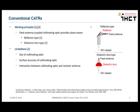I want to give a brief introduction to conventional CATRs. Conventional CATRs employ a feed antenna coupled to a range collimating optic, which provides plane waves. The RX is placed and rotated in these plane waves. You can see sketches on the right for reflector type and dielectric lens type CATRs. This is basically the whole principle.